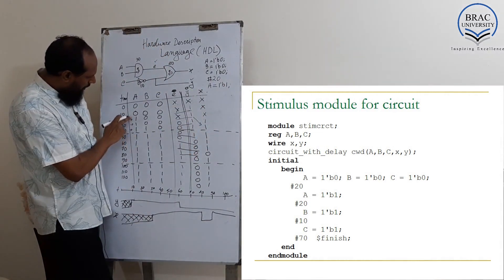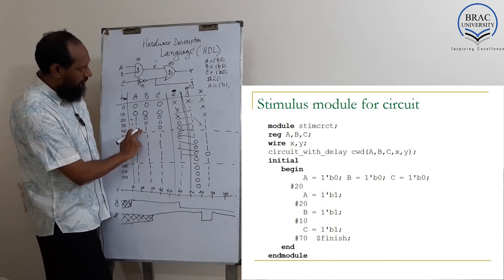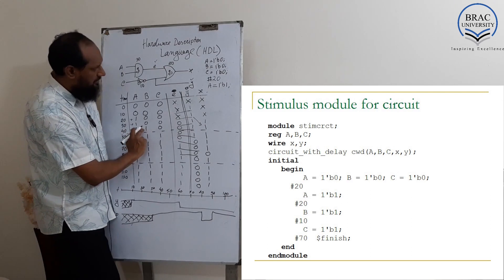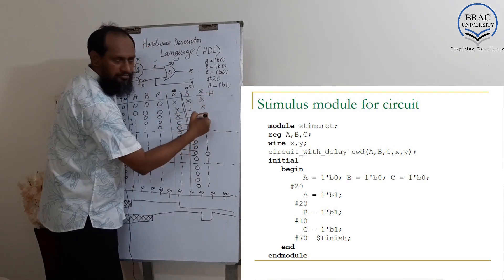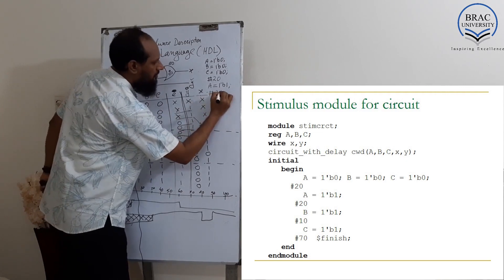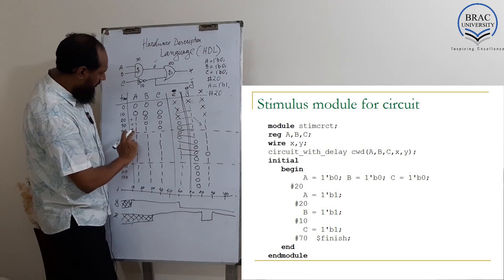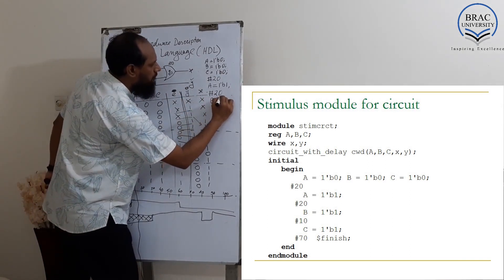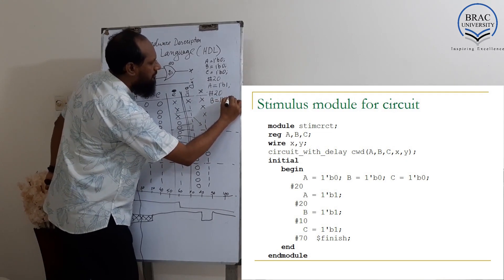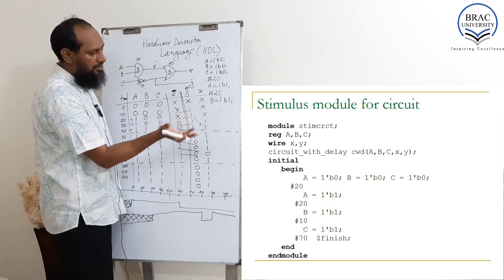Then on what time we changed the value of B? On 40. So 40 times means what was our delay? 20. So 20 plus 20 means 40. Here on this time, we change the value of B - B equal to 1 bit 1, since we did not change the value of A and C.